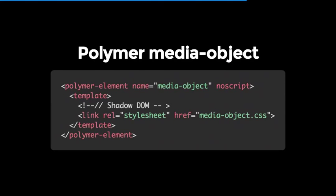If we redefine our media-object element using Polymer, I don't have to use any JavaScript at all to define it. I use the polymer-element tag, and I can pass the noScript attribute to tell Polymer it doesn't need to do anything in the createdCallback — it will automatically register the element. Anything inside a template inside a Polymer element gets inserted into the shadow DOM. I can also reference an external stylesheet, and Polymer will handle inlining it into the custom element.